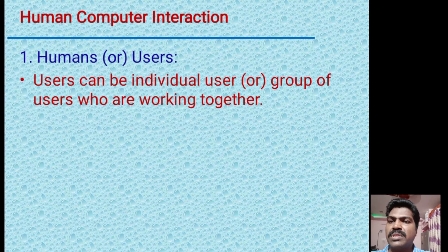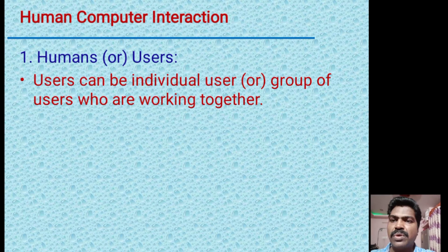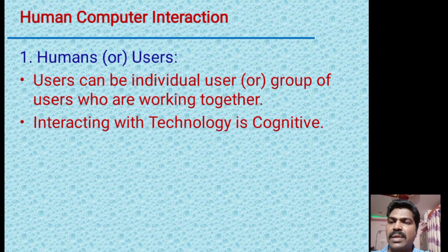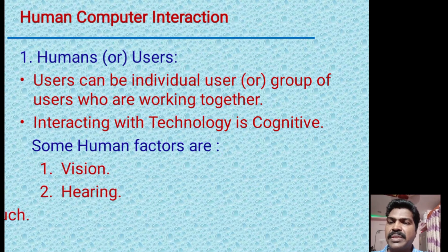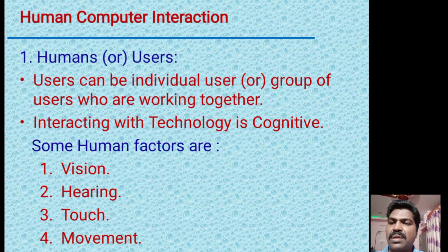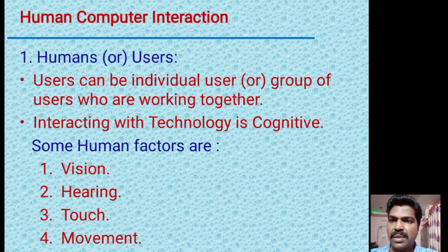First of all, what are humans or users? Users can be an individual user or a group of users who are working together and interacting with technology. This is cognitive in nature. As we have discussed earlier, human factors include vision, hearing, touch, and movement — these four human factors were covered in the previous class.